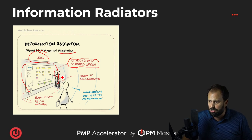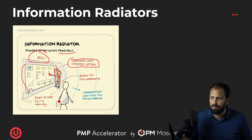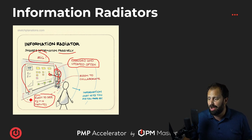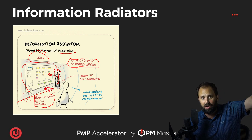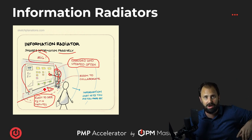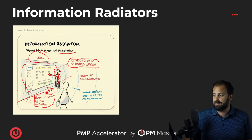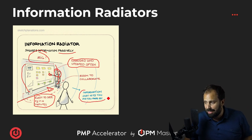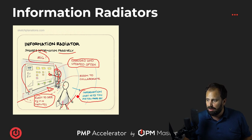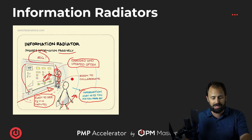It gives room to collaborate — look at these little to-do dudes talking it out, like 'oh yeah, look at this little board, that's what's happening.' Easy to see, it's in the hallway, it's where everybody passes by. You don't have to go to some crazy conference room — no, it's big and in your face, and the information just hits you as you pass by. Look at this guy, he didn't even stop walking, he's riding on by but he's getting some info. That's what it's all about. That's an Information Radiator — now you know.